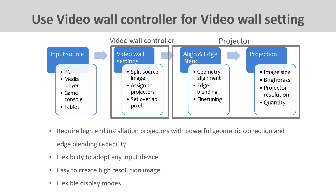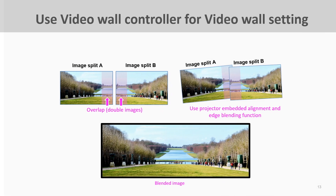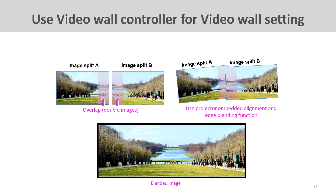For non-PC solutions, one option is using a video wall controller for video wall settings combined with projectors that have embedded alignment and edge blending functions. Advantages include the ability to use any input device, easy system resolution scaling, and flexible display modes. The video wall controller is hardware that splits and assigns images to multiple projectors while also creating and setting up the overlap required for projector edge blending.